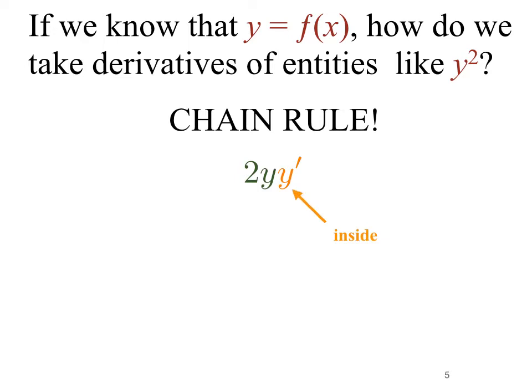Now why is that? The inside function, the derivative of y would be y prime. We have to represent it by y prime because we don't know what the function is, but whatever function was inside, we'd have to take its derivative. The derivative of the outside function, something that looks like y squared, applying the power rule would give us 2y. So the derivative of y squared would be 2y times y prime.